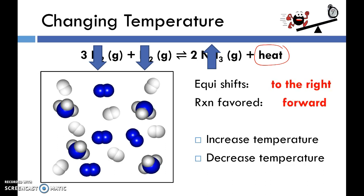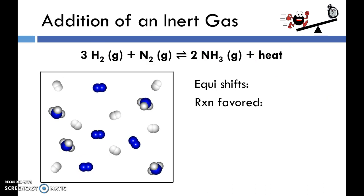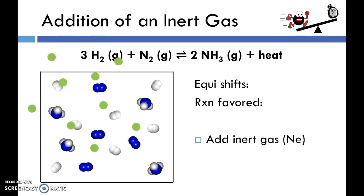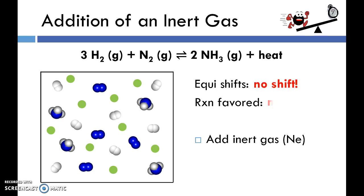There are two others that come up from time to time. The addition of an inert gas — inert meaning non-reactive — such as noble gases from group 18 of the periodic table. If we add neon, for example, it isn't going to react with either the reactants or the product. There is no shift and neither reaction is favored. The partial pressure of all gases changes by the same factor, so it does not change the rate of the forward or reverse reaction and the system remains at equilibrium.